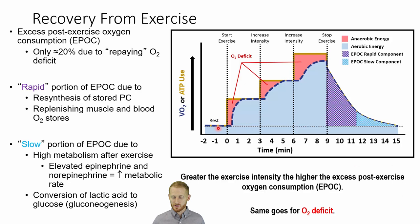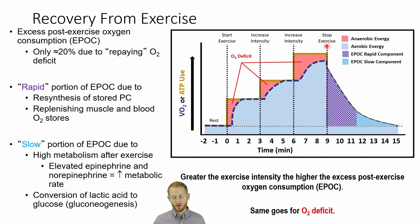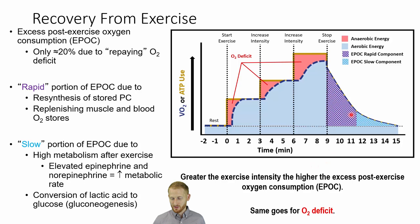When we stop exercise — going from eight miles per hour on a treadmill to immediately stopping and sitting down — the energy needs go down quickly, but they don't go down to zero immediately. We also continue to use a lot of oxygen, much more than what we would need at rest. This period after exercise, where we continue to consume excess oxygen, produce a lot of ATP, is called the excess post-exercise oxygen consumption, or EPOC for short.